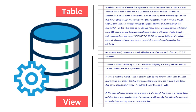The key difference between a view and a table: a view is not a physical table and does not store any data itself, whereas a table is a physical structure available in the database and is used to store the actual data.